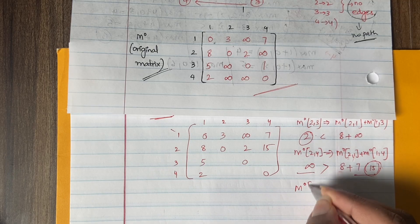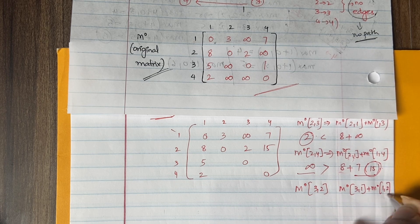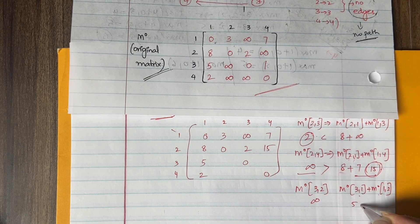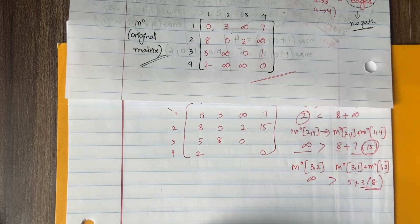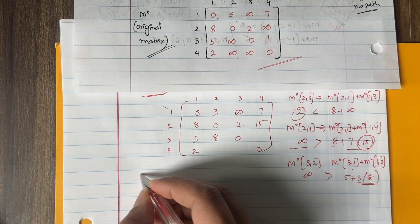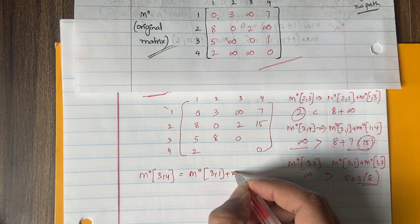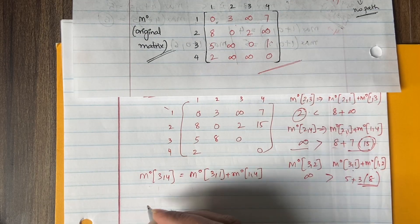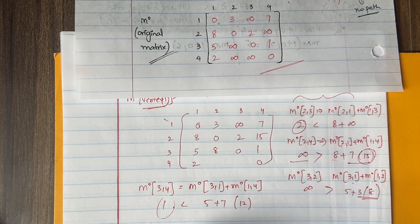For M1[3,2]: direct M0[3,2] = infinity, versus M0[3,1] + M0[1,2] = 5 + 3 = 8. So we take 8. For M1[3,4]: direct M0[3,4] = 1, versus M0[3,1] + M0[1,4] = 5 + 7 = 12. Since 1 is the minimum, we keep 1.